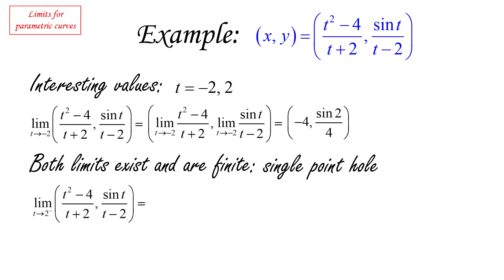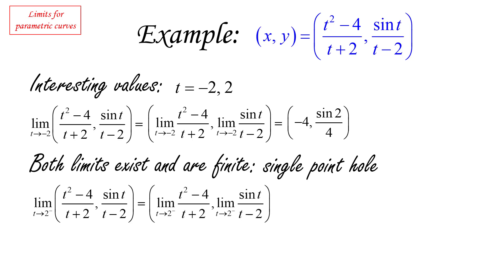Now let's look at the other value. If we look at the limit as t approaches two from the left — and I'll explain in a moment why I'm just looking at it from the left — same idea: we're looking at the two limits separately. Both are fairly simple and basic limits. Those two limits end up being zero and negative infinity.